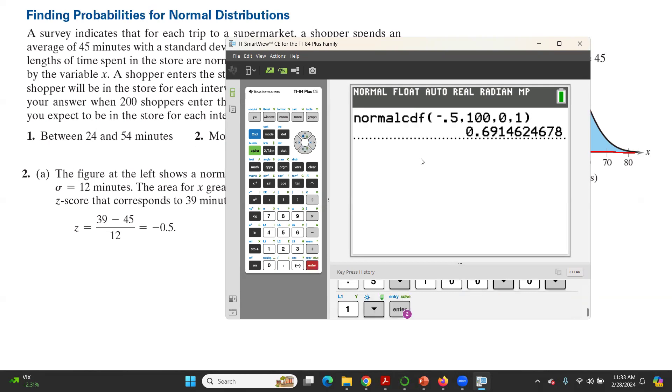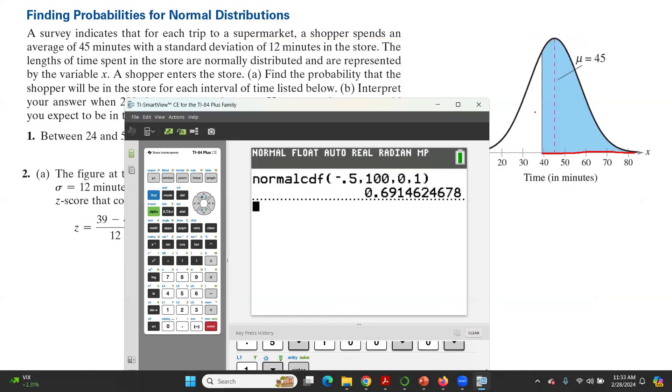If you do the calculation, you get this probability. The probability that a random shopper spent more than 39 minutes in the store, or this shaded area, is 0.6915.